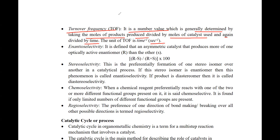This means: moles of product divided by moles of catalyst gives turnover number, and if we divide it by time, then we get the turnover frequency. The unit is per second, or per cycle.